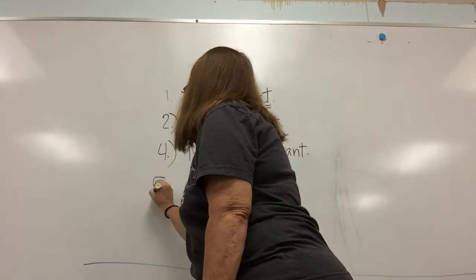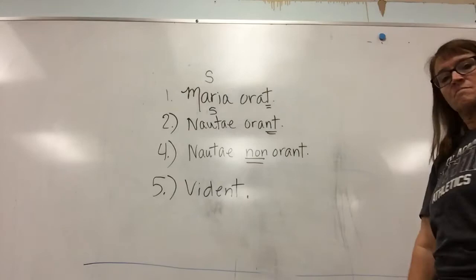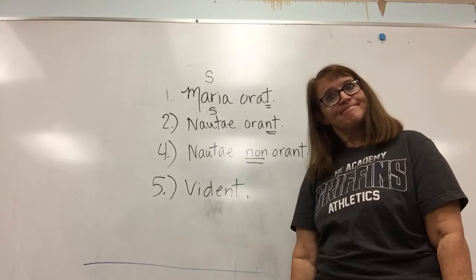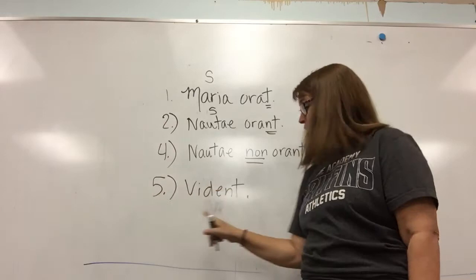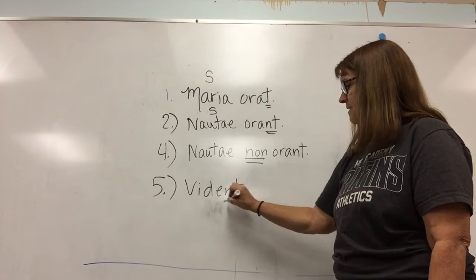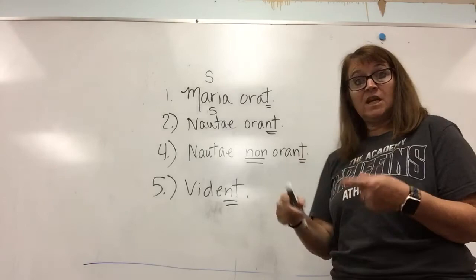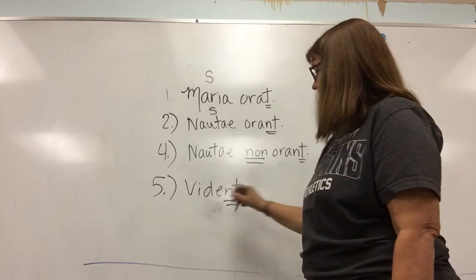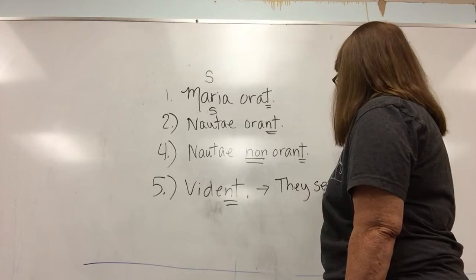Number five: vident. So if there's no subject there, you're going to take the subject from the verb. And when it ends in -nt, the subject is 'they.' If it ends in -t, the subject is going to be 'he,' 'she,' or 'it,' and you can just choose one. So the answer to number five is going to be: they see.